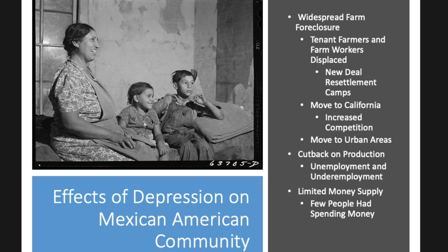For Mexican Americans, the widespread farm foreclosures pushed a lot of tenant and farm workers off their lands — they were looking for homes and for work. Some New Deal programs established resettlement camps that allowed families to have places to live. The trek to California only increased competition for Californios already living there, who now had to compete for jobs with all the people moving in from the Dust Bowl area. Mexican Americans who moved into urban areas also saw unemployment and underemployment because of cutbacks in production — people weren't buying products, so factories didn't have to produce as much.